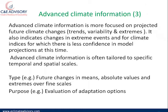Advanced climate information is more focused on projected future climate changes — for instance, the trend of rainfall, the trend of temperature, and variability from day to day, week to week, or month to month, over the next six months, one year, or many years. It also looks at extremes and how rainfall may behave. Advanced climate information indicates changes in extreme events and climate indices, though there is less confidence in model projections at this time, especially when looking far into the future — 10, 20, or 100 years.